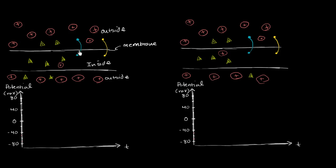So if you had a voltmeter measuring the potential difference across the membrane — the voltage difference between inside and outside — you would get about negative 70 millivolts. So this is negative 70 millivolts, and we'll use both of these graphs to describe different scenarios.